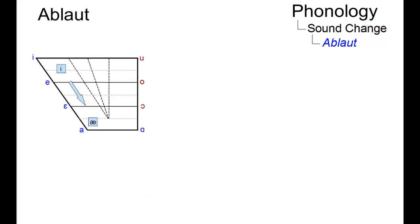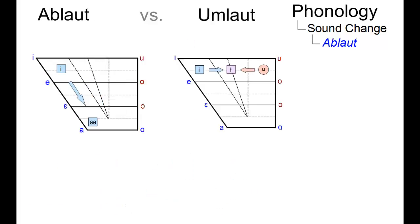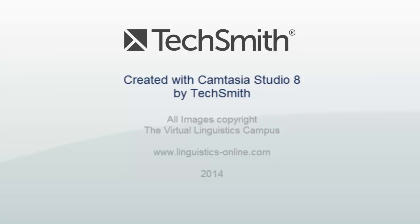Ablaut must be distinguished from other forms of vocalic gradation which developed later, such as Germanic Umlaut or the results of English word stress patterns.